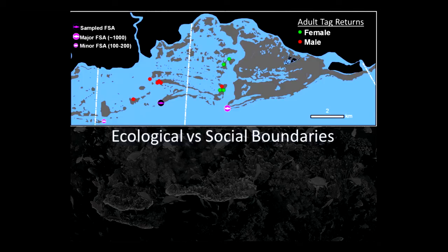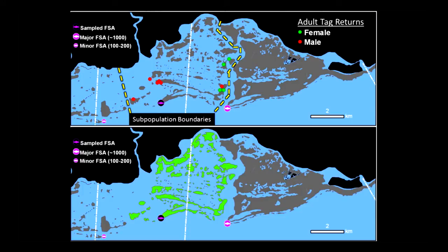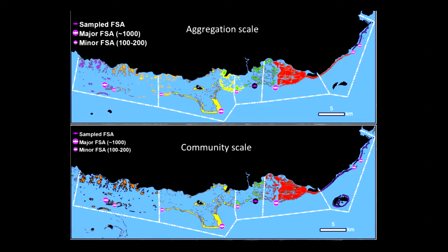From that tagging information, we could identify which reefs are actually supplying each of the aggregations in the system — essentially the subpopulation boundary for the coral trout. Coloring those reefs shows that the adults using one aggregation come from reefs straddling the social boundary. Making educated guesses for all the aggregations, you get green reefs, red reefs, and yellow reefs, and in one case the aggregation is inside one community's tenure but most of the fish using it are actually from a different community's tenure.